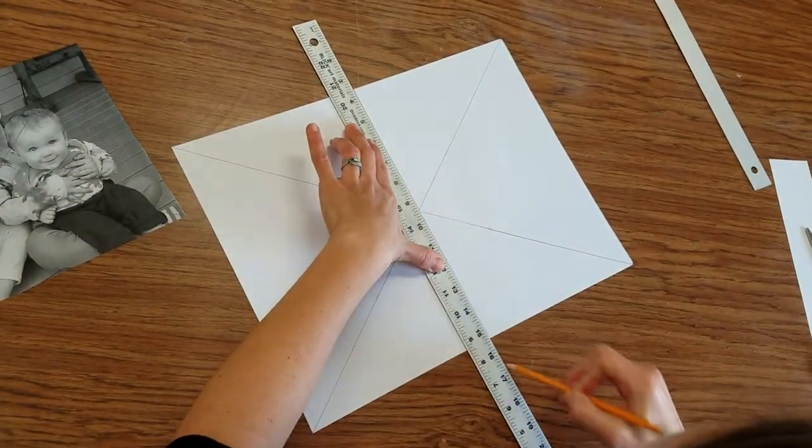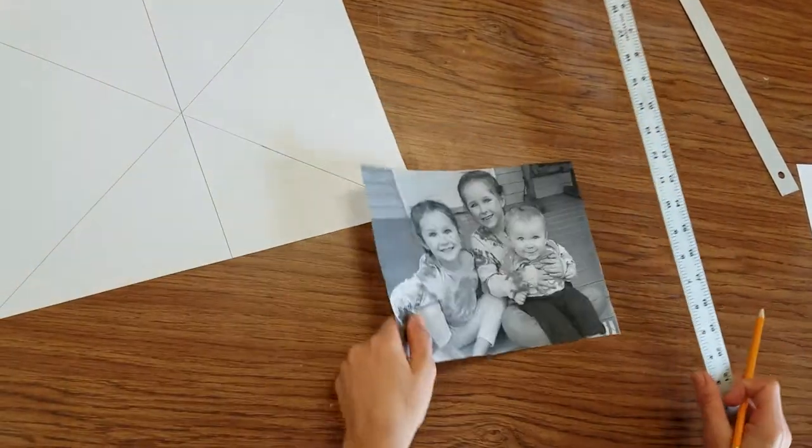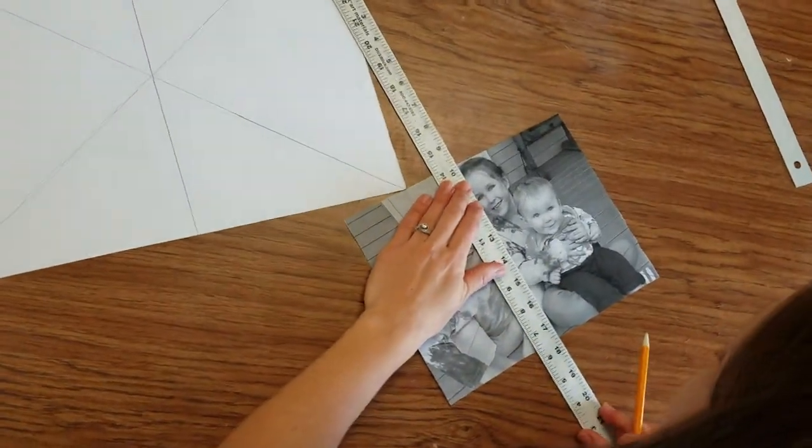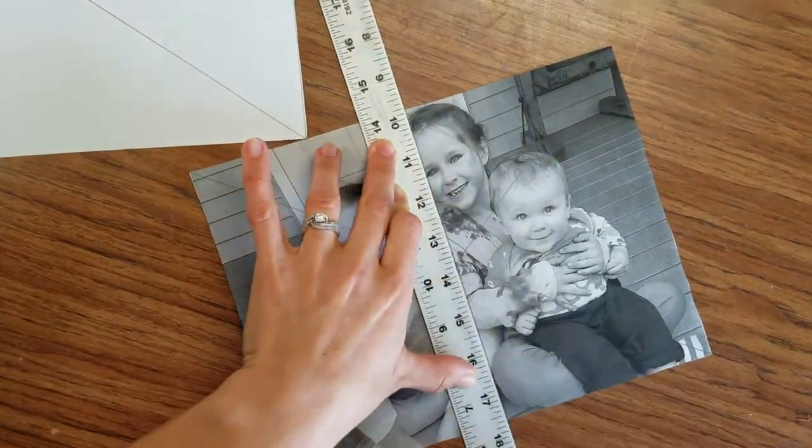And draw a vertical line through your drawing paper. And whatever you do to your drawing paper you've got to do the same thing to your photograph. So I'll do that same thing, vertical line right through my photograph.